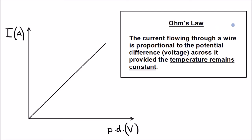This is Ohm's law written out in words: The current flowing through a wire is proportional to the potential difference across it, provided the temperature remains constant.